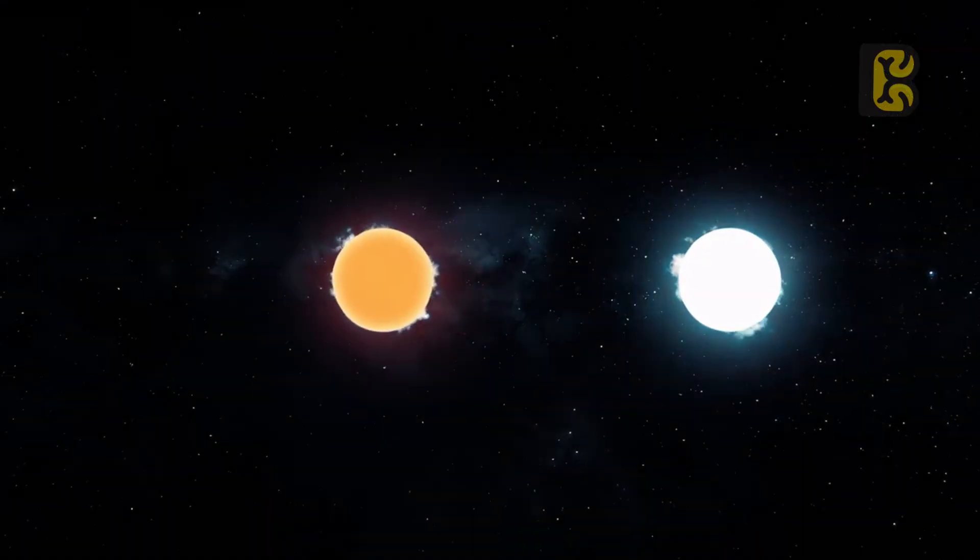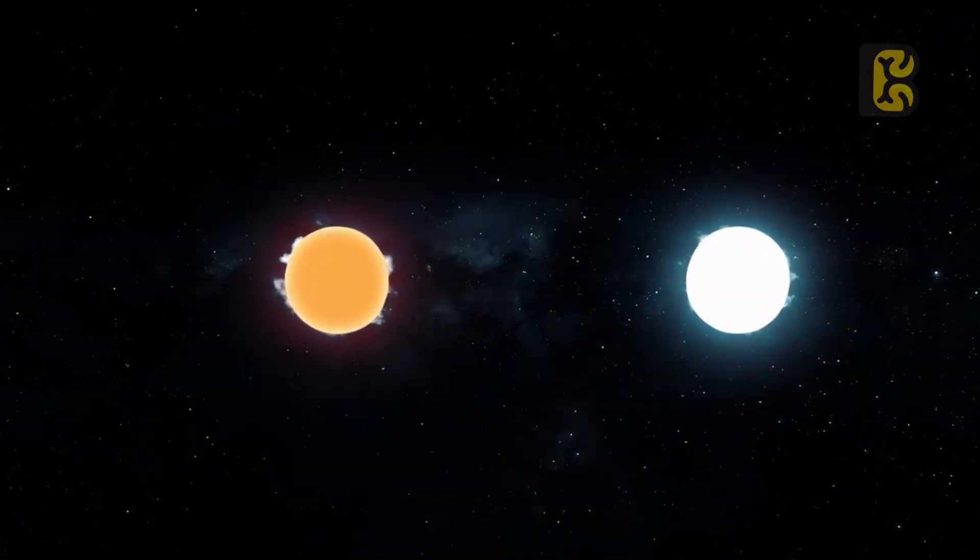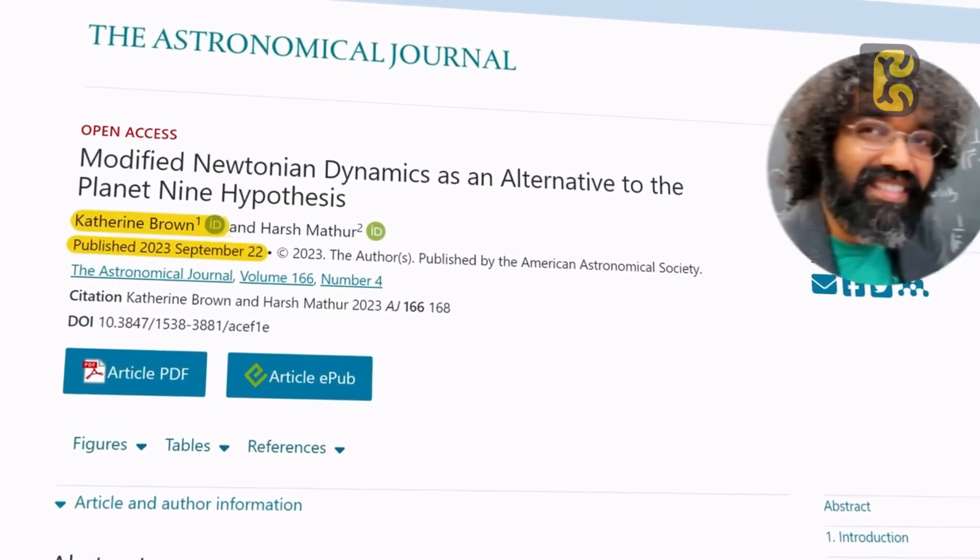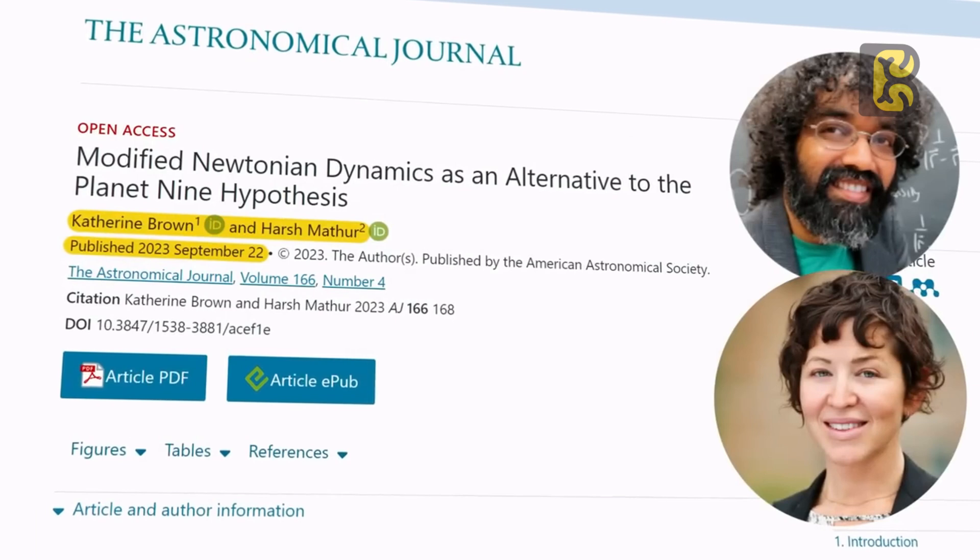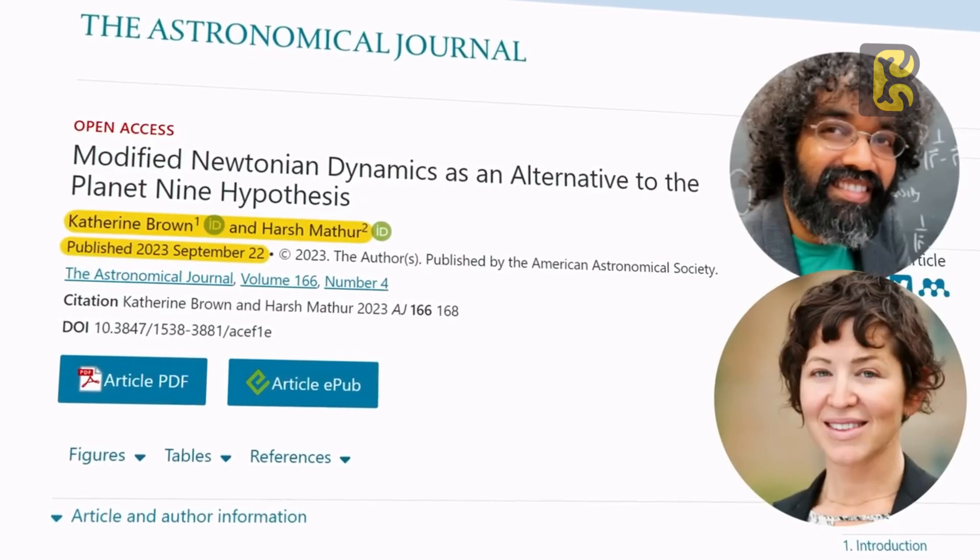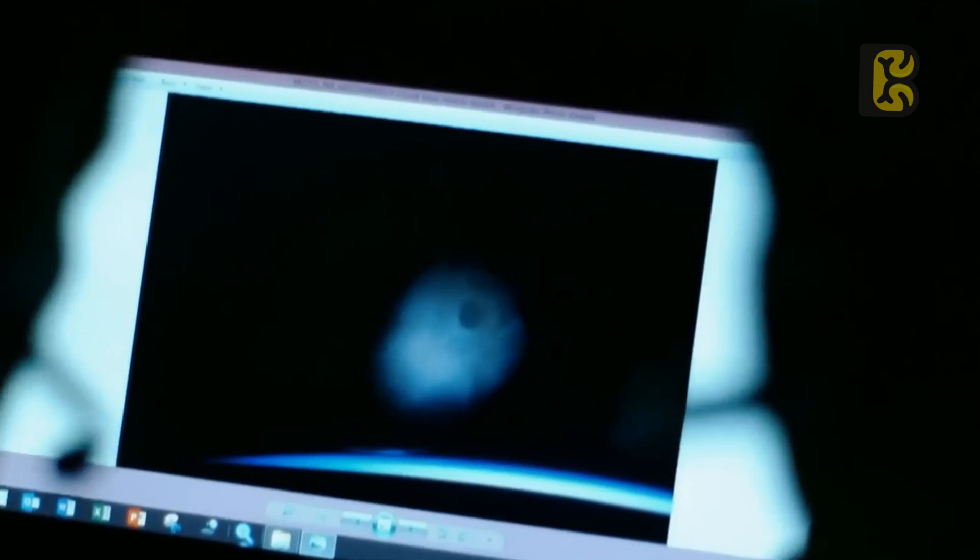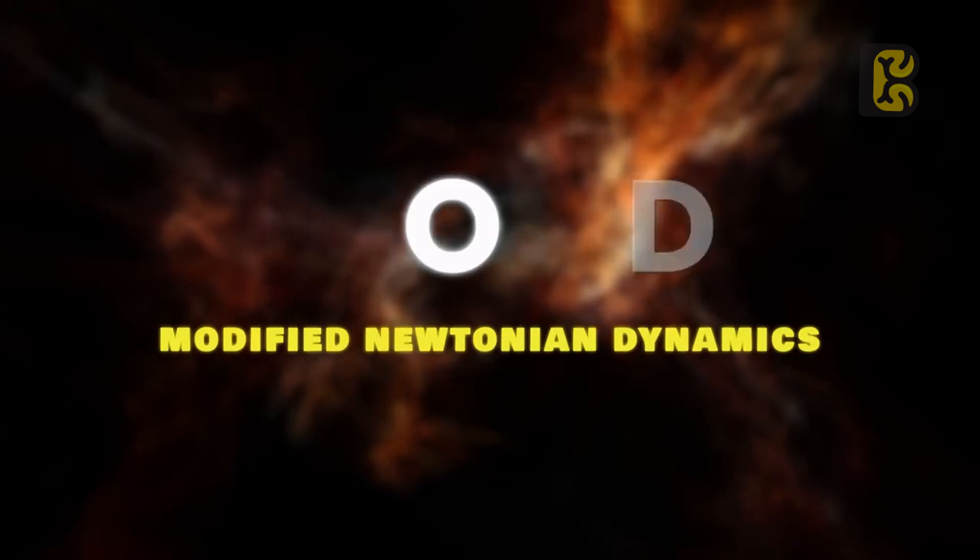This means that the farther an object gets from something, the weaker the gravitational force it experiences from that object. However, on September 22, 2023, Harsh Mather and Katherine Brown published a research paper in the Astronomical Journal. They examined all the orbital inconsistencies through the lens of a hypothetical gravity principle and found that all previously observed anomalies vanished. This hypothetical principle was named Modified Newtonian Dynamics.